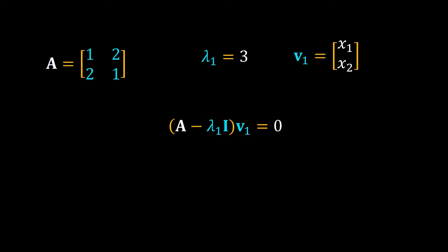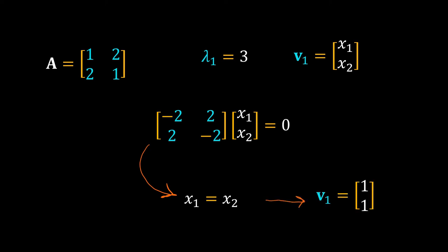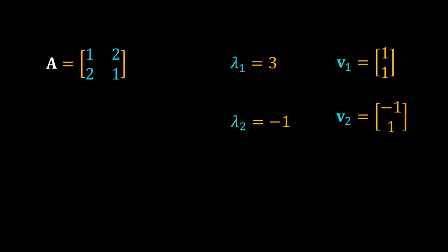By replacing the terms, we get a system of equations. x1 equal to x2 is the solution of this system of equations. We can assume any real number for x1. For simplicity, let's consider x1 is 1. So the eigenvector is [1, 1]. Similarly, we can calculate the eigenvector for the eigenvalue minus 1.